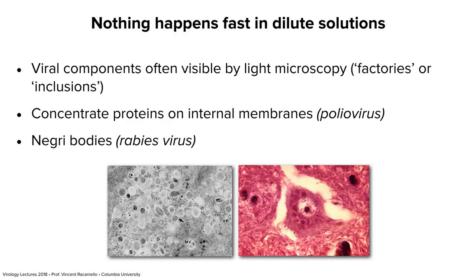That's one example of how transport pathways are important. Another general principle is that viruses typically assemble in concentrated regions, because nothing happens fast in dilute solutions. Viral components concentrate in factories or inclusions. When pathologists were looking at tissue sections from people with viral infections, they would see visible bodies in cells under the light microscope — called inclusion bodies. We now know those are sites of assembly of virus particles.